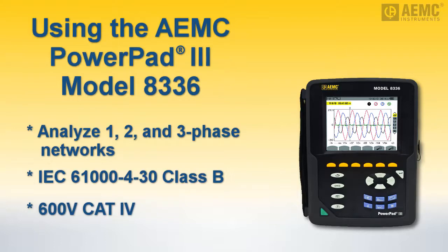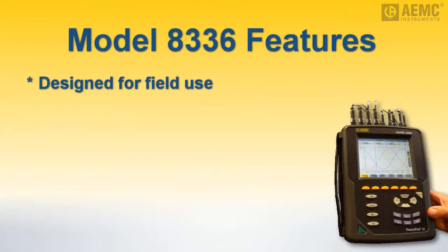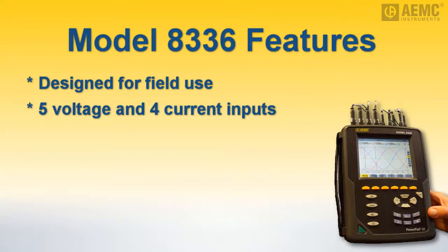The Model 8336 is designed for use in the field with direct access to configuration and measurement data. It includes five voltage input connections facilitating four voltage measurement channels and four current input connections for four current measurement channels.